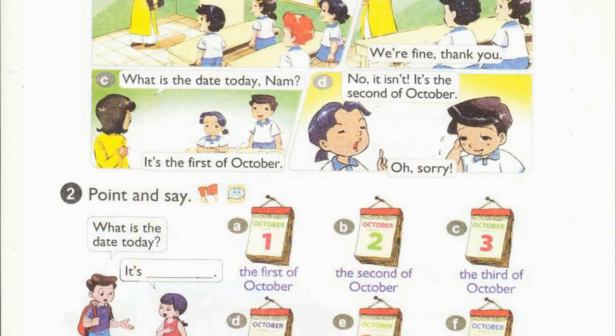C. What is the date today, Naan? It's the 1st of October. D. No, it isn't. It's the 2nd of October. Oh, sorry.